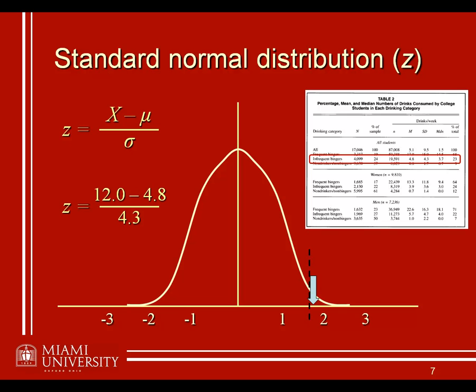Which is what we would do here, and we would say, listen, infrequent binge drinkers typically drink about 4.8 drinks a week. Not every single one of them drinks 4.8. That's why we have some variability. In particular, a standard deviation of 4.3.